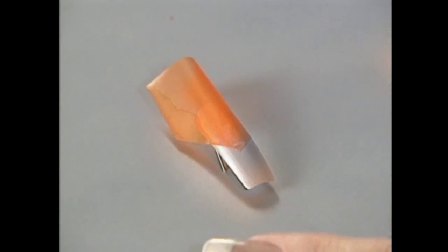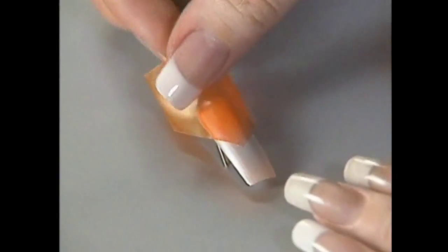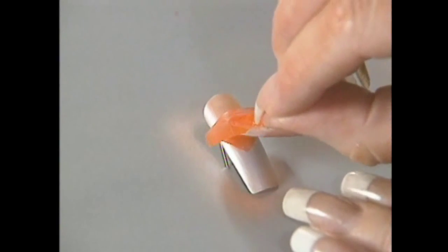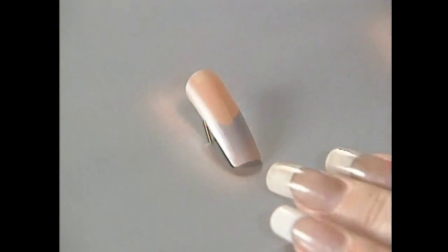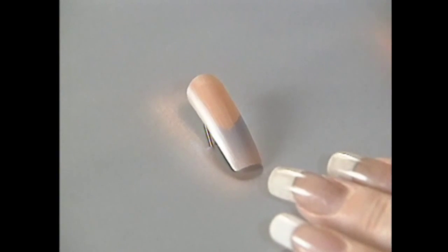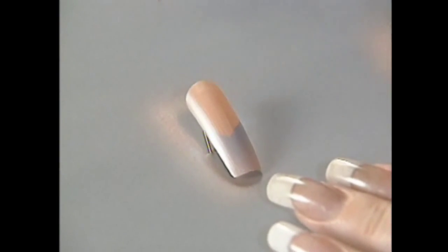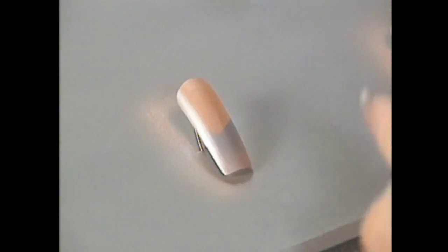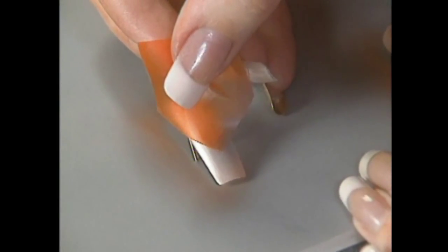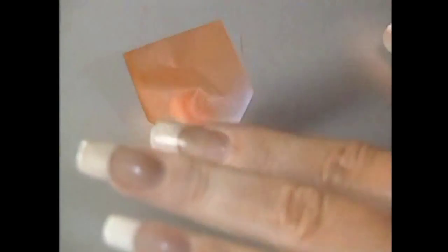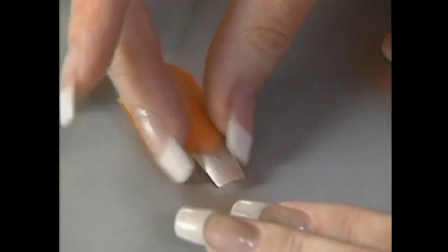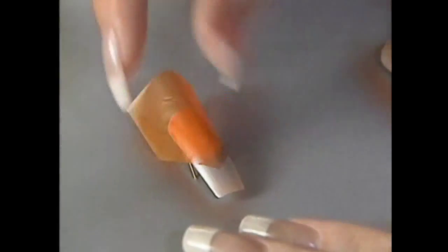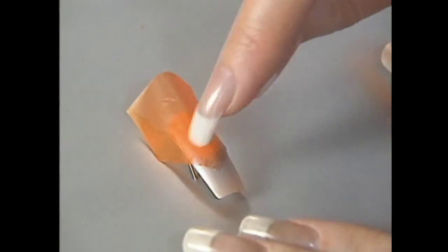Now when removing frisket film, be sure that you always grab the film and peel straight back. You don't want to pull straight up because if you pull straight up, it will lift paint sometimes. Now what you'll do to get your white tip is you'll just line up the point and place it down, just protecting that blue stripe that we just made. And again, making it nice and tight to the nail. Just like that. Now we've protected the base of the nail and the stripe.